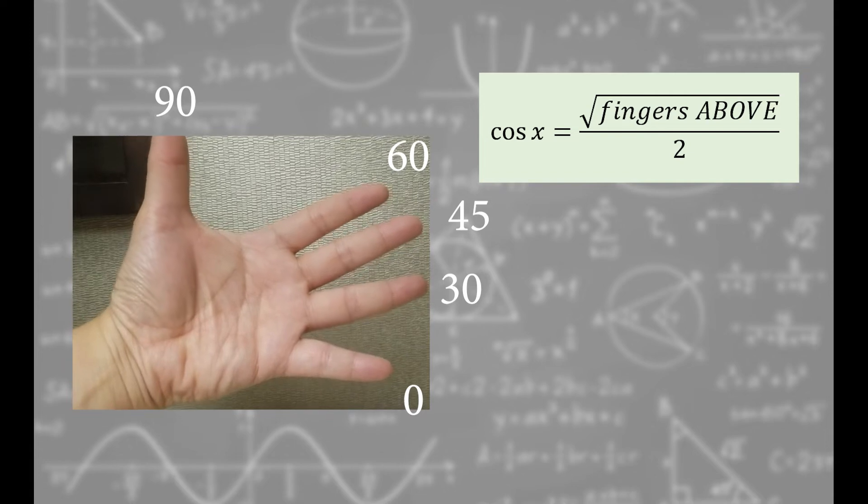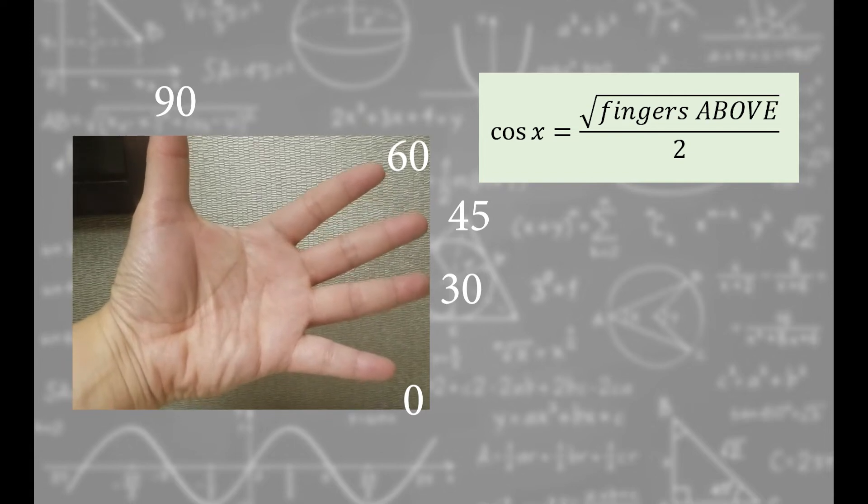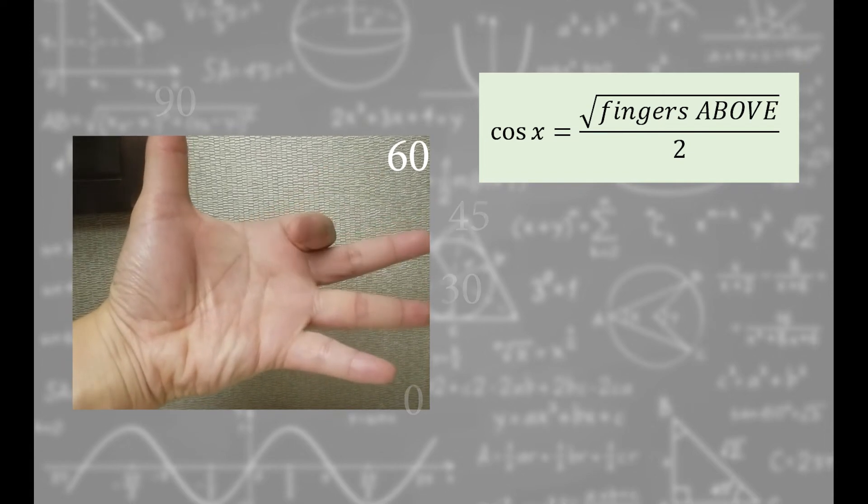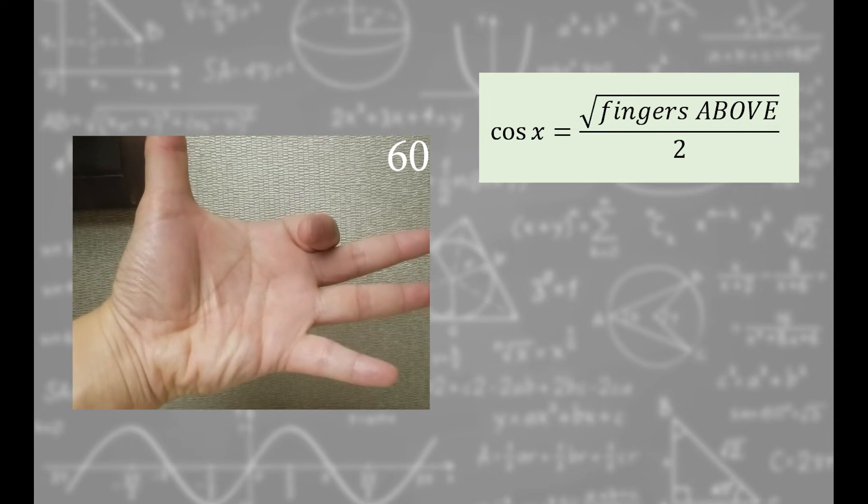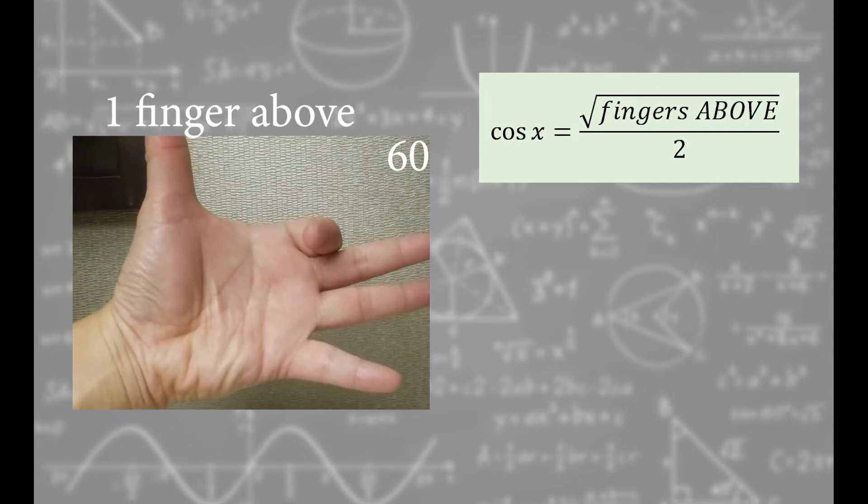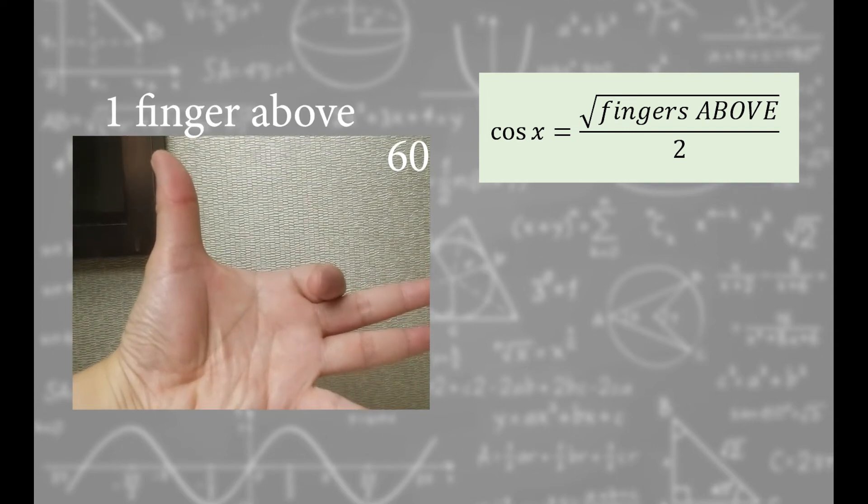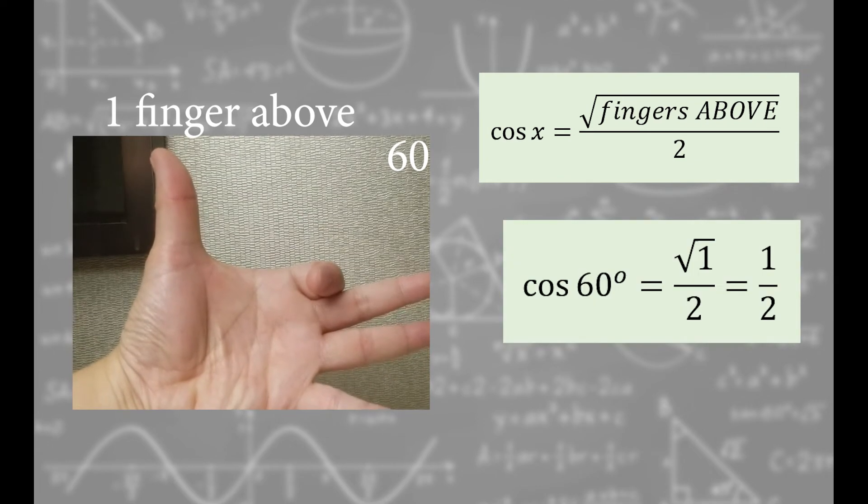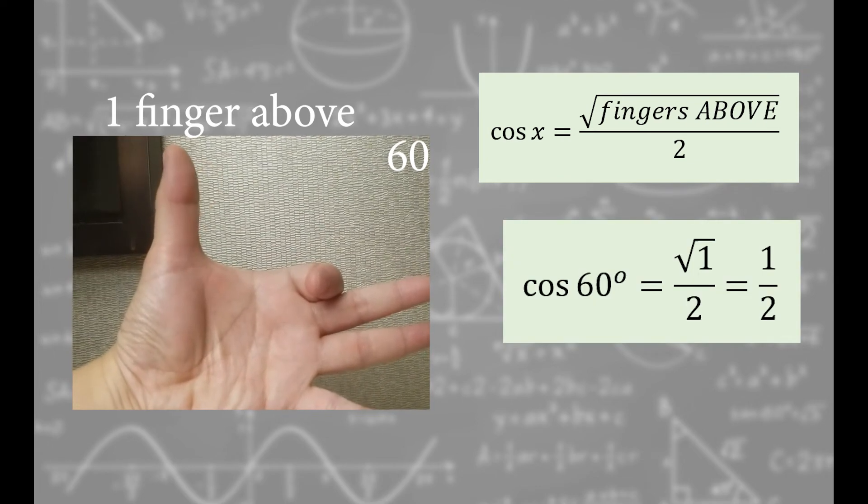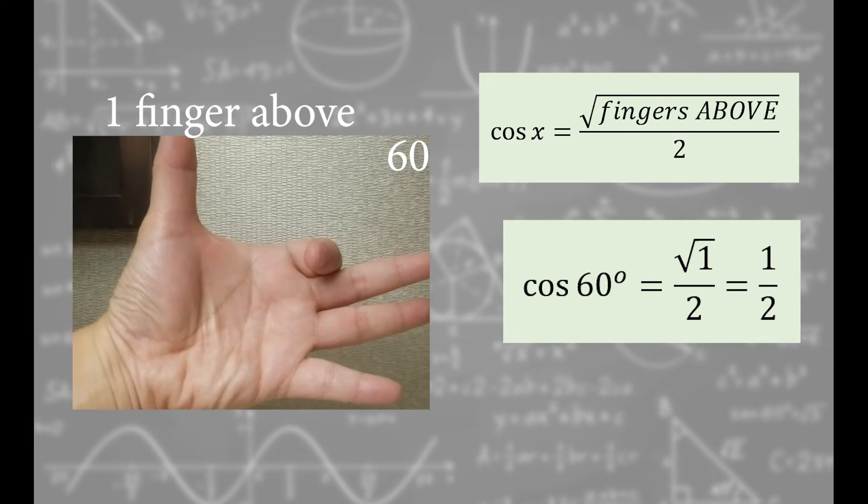Let's take cosine of 60 degrees. This finger is 60 degrees. Bend it in and get it out of the way. There's one finger above it. So cosine 60 degrees equals square root of 1 over 2, which simplifies to 1 half.